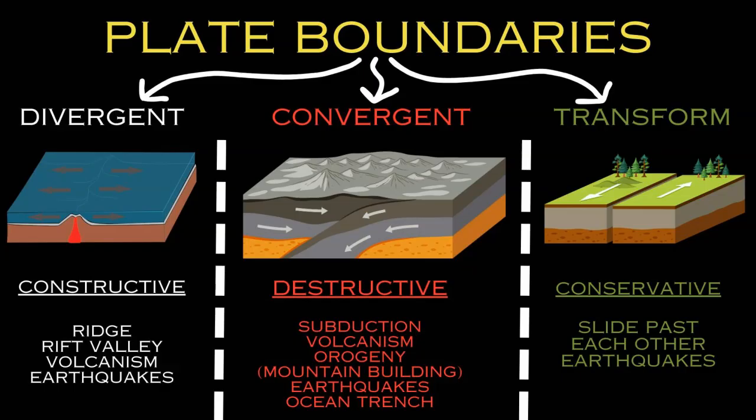With any kind of oceanic plate converging, there's a difference in density that causes subduction, where the heavier, denser plate goes under the lighter plate. This causes melting, earthquakes, accretionary wedges of material pushed onto the lighter plate, and magma that builds up and flows to the surface of the lighter plate, creating volcanoes.